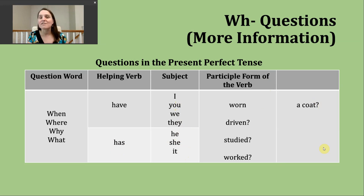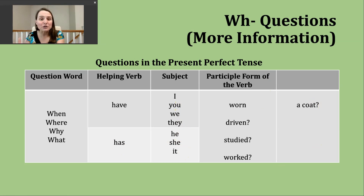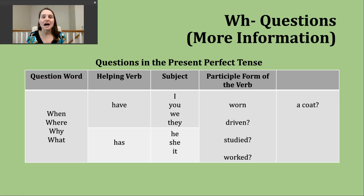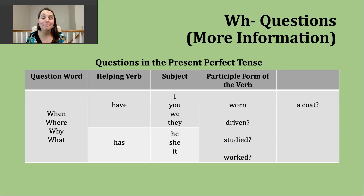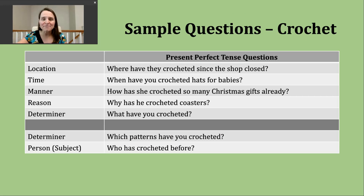There might be other words that follow our verb to help give the question greater context. You're welcome to pause this video and look at the chart and practice making a few different questions, but we're going to essentially select one word from each box. I'll do one example: "What has he studied?" — here I'm asking for topics or subjects, going back into the past and continuing into the present. Now we're going to practice making more WH questions with our verb of the day, crochet. We're going to start off with a question about location, about place. We use the question word where. An example might be: "Where have they crocheted since the shop closed?"